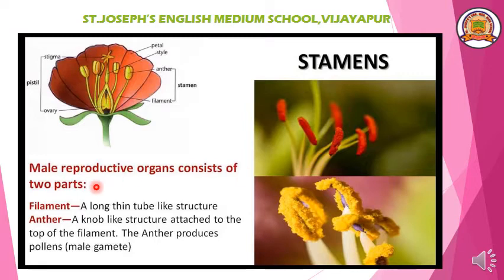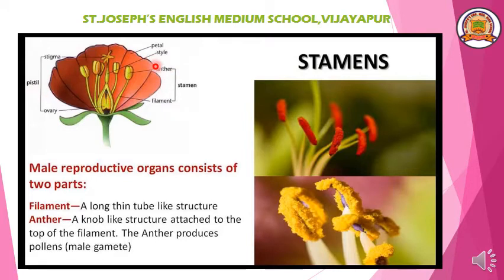Let us discuss the male and female parts in detail. Stigma, style, ovule, and ovary together are called the pistil, which means the female part. Whereas anther and filament are called the stamen, which means the male part of the flower.